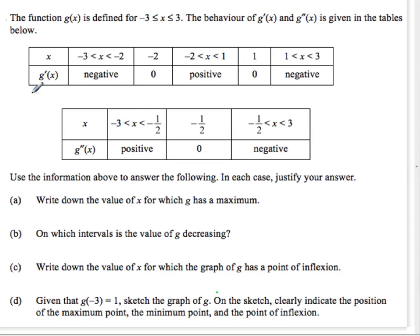So g prime, you should know, represents the slope of the function at any given point. And then g double prime represents the concavity of the function.